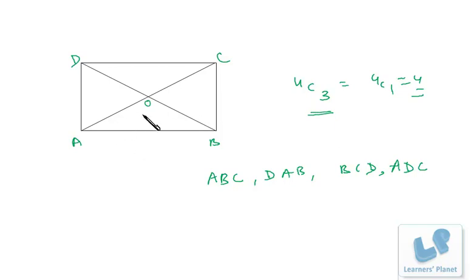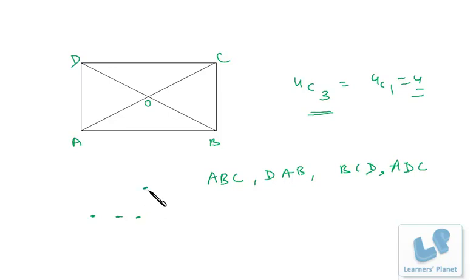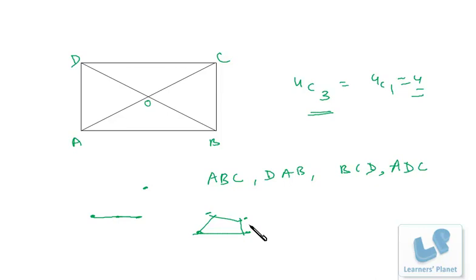To summarize: to draw a line, take combinations of 2 points; for triangles, combinations of 3 points; for quadrilaterals, combinations of 4 points. The important condition is that for triangles and quadrilaterals, the points must not be collinear. For example, if three of four points are collinear, you cannot form a valid quadrilateral.